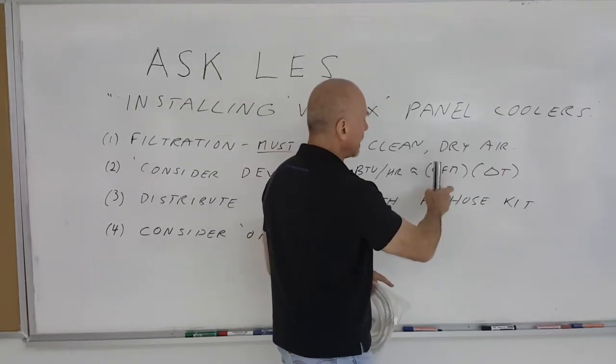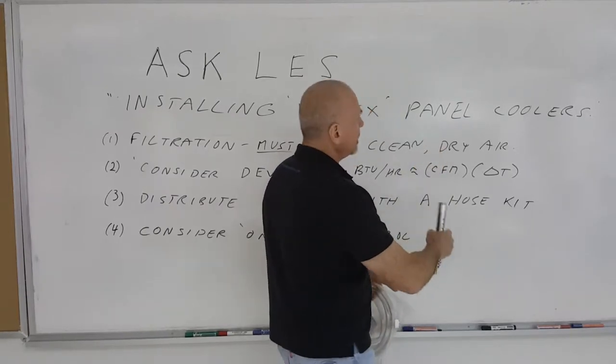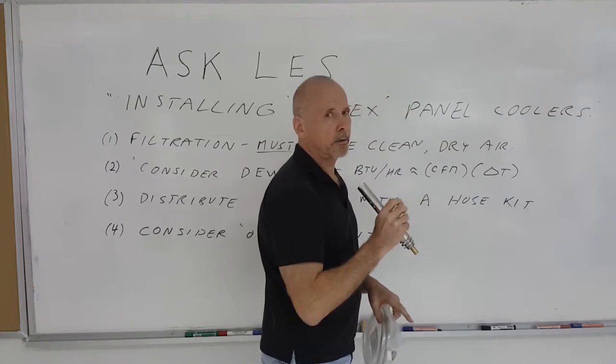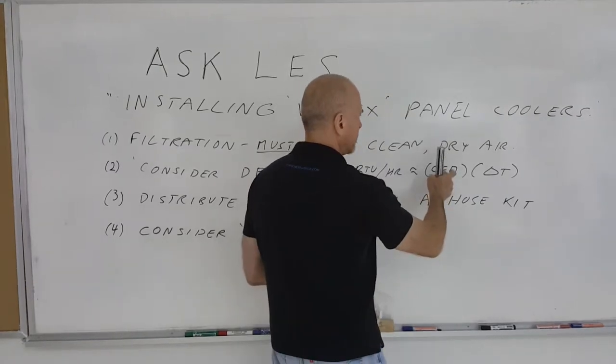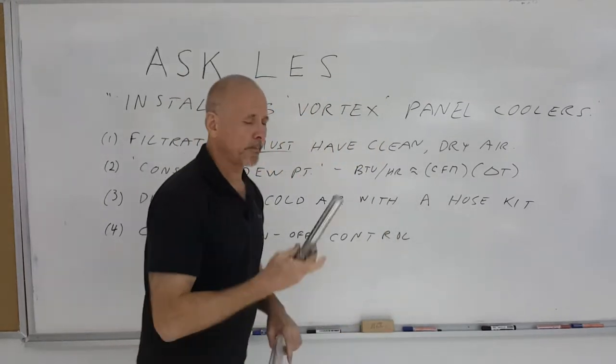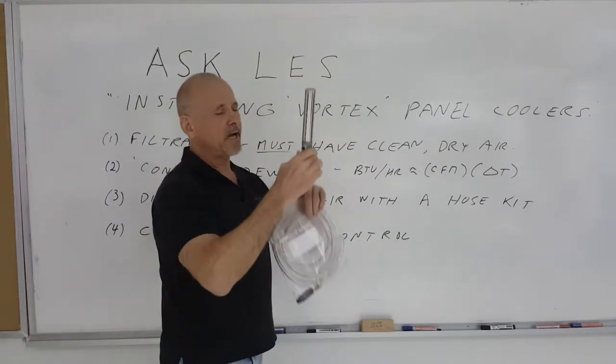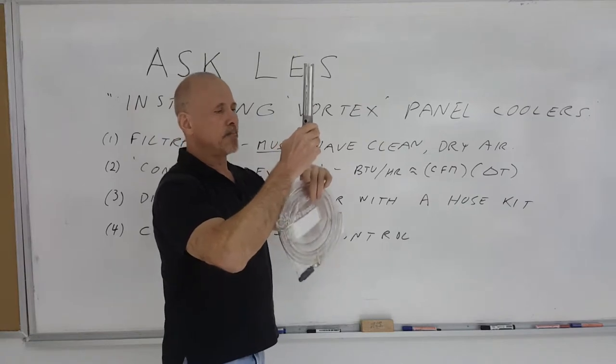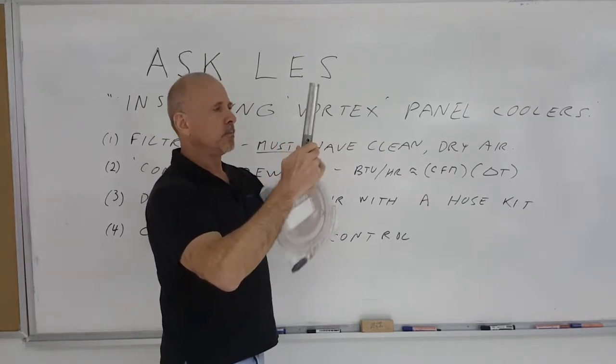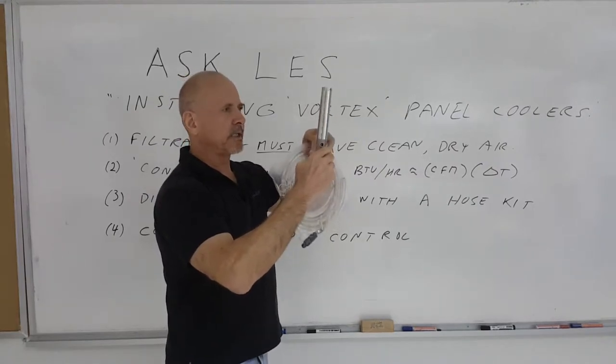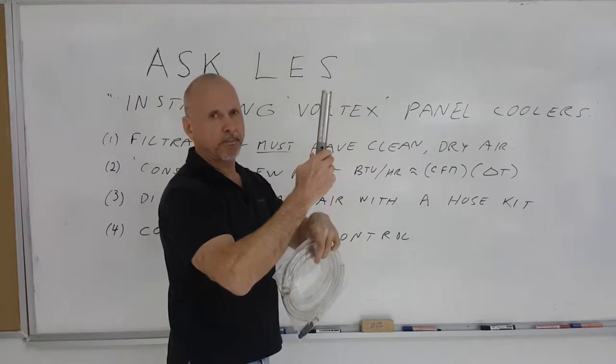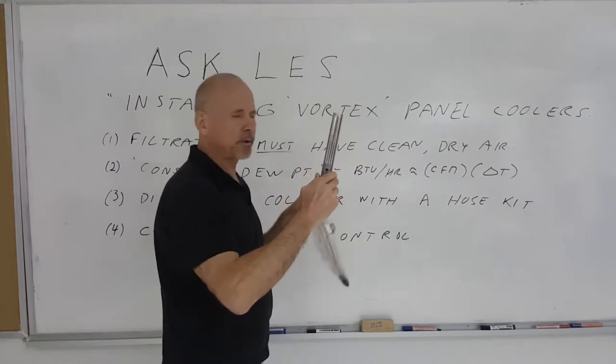Now what happens is if the CFM or the flow rate coming out of the cold end gets larger, your Delta T actually gets smaller. If the CFM is lower, your Delta T gets larger. If you have a temperature coming out of say minus 10 degrees Celsius, your flow rate may be only about 60% or 40% of the actual compressed air going into the system, and of course it also depends on the temperature of the compressed air.